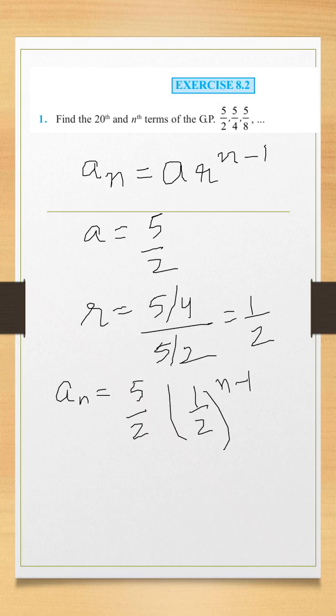And a20, what will it be? n ki value 20 rakh denge. So it will be 5 by 2 into 1 by 2 raised to the power 20 minus 1 is 19. This gives you 20th term and nth term.